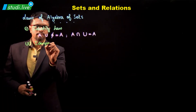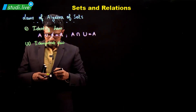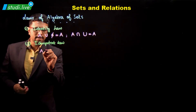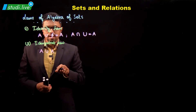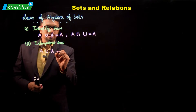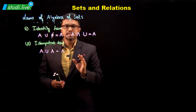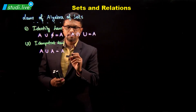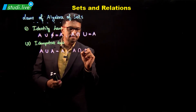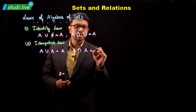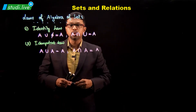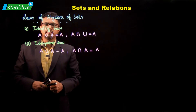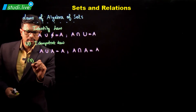Second, we have the idempotent law. In the idempotent law, if we take the union of A with A, no matter how many times we take the union, we will get the set itself. So A union A equals A, and similarly A intersection A equals A.